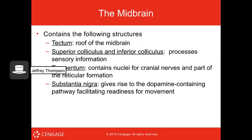The midbrain has the tectum — the roof of the midbrain — and the superior and inferior colliculi, which process sensory information. The tegmentum contains nuclei for cranial nerves and is part of the reticular formation. The substantia nigra gives rise to many dopamine-containing pathways that help with movement — a lot of dopamine creation happens there.